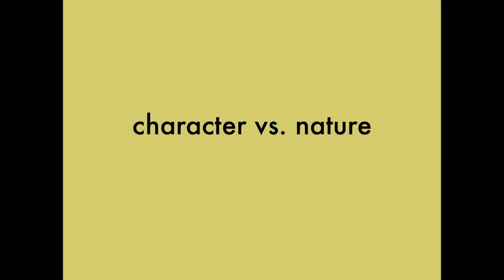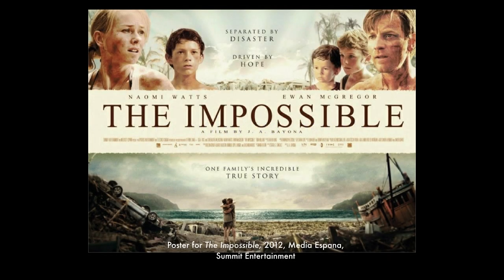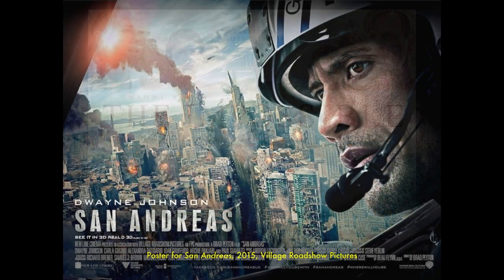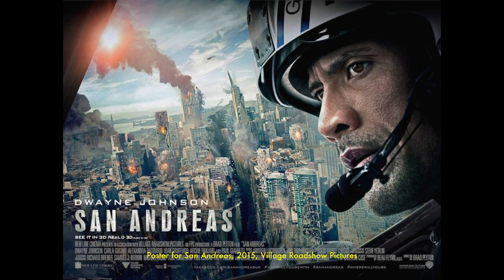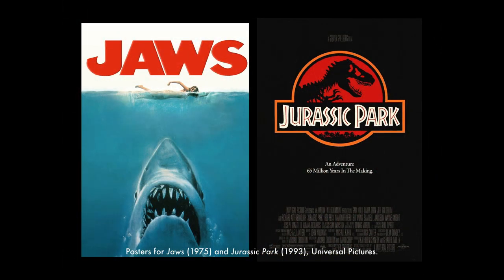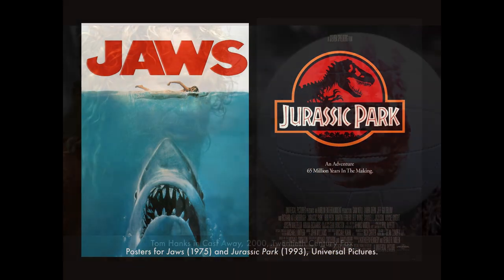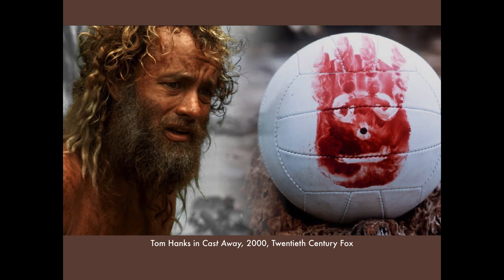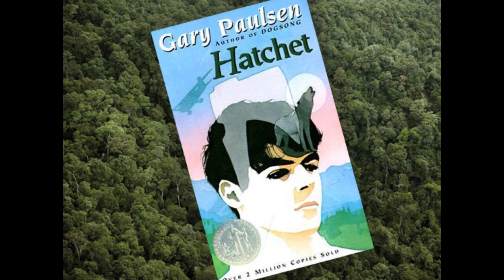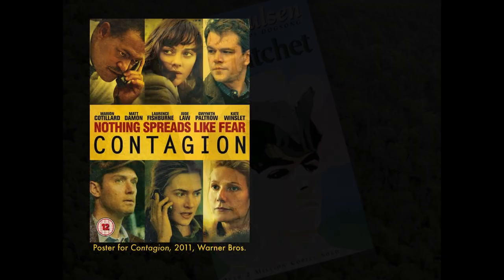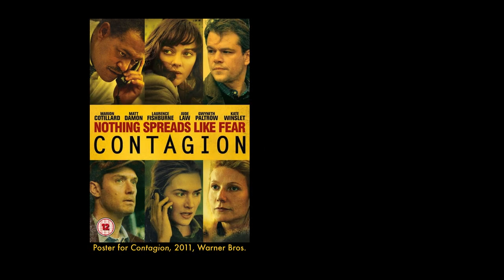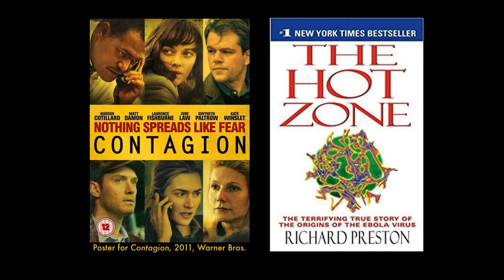Next, Character vs. Nature. This is when a character or characters are in conflict with something in the natural world, like a natural disaster — a flood or earthquake. They could be in opposition with a living animal, like in Jaws or Jurassic Park. Think survival stories like Castaway or Hatchet. Or it could even be a story about a character's fight against a disease like cancer, a killer bacteria or virus — like in The Hot Zone, where scientists are trying to contain an outbreak of the killer virus Ebola. That's nature too.